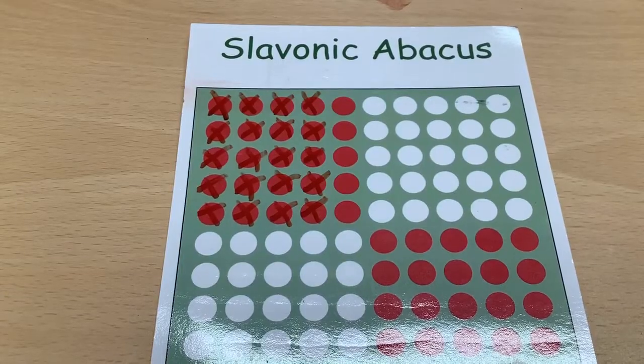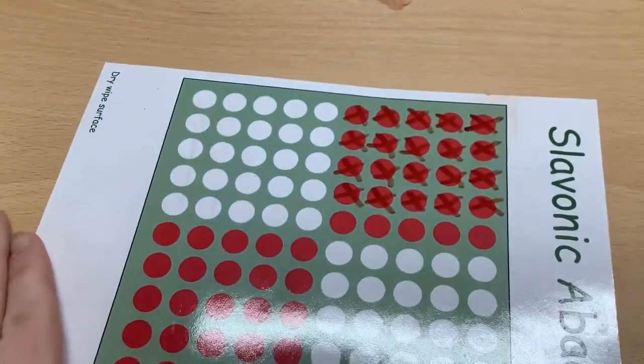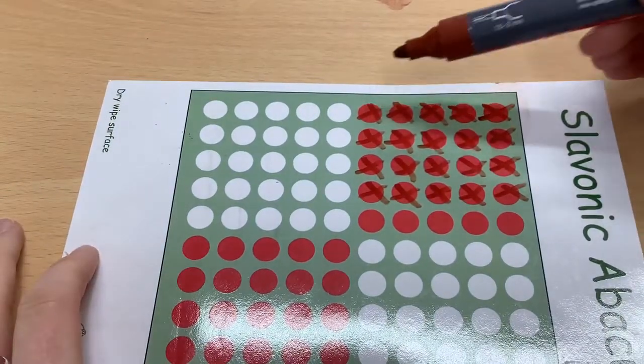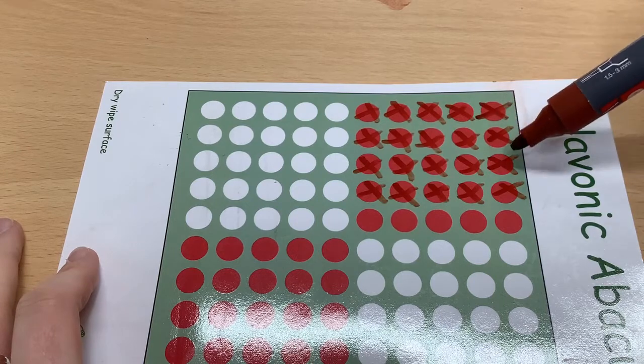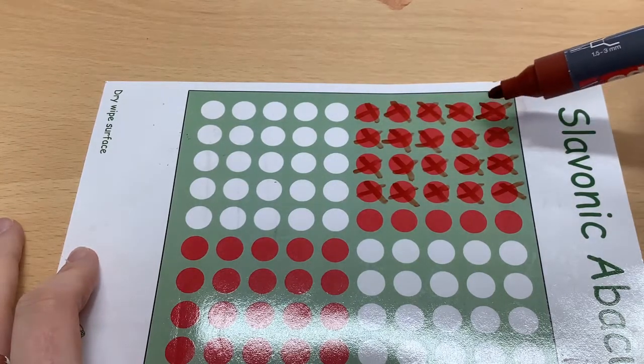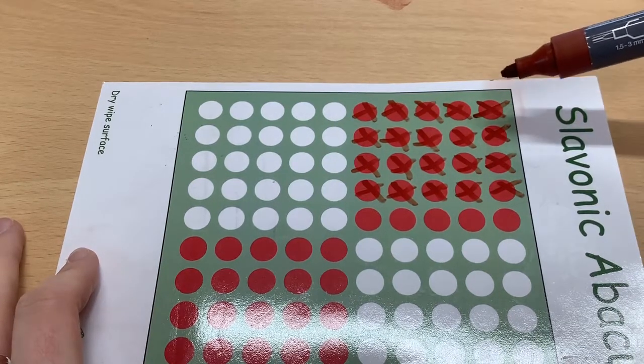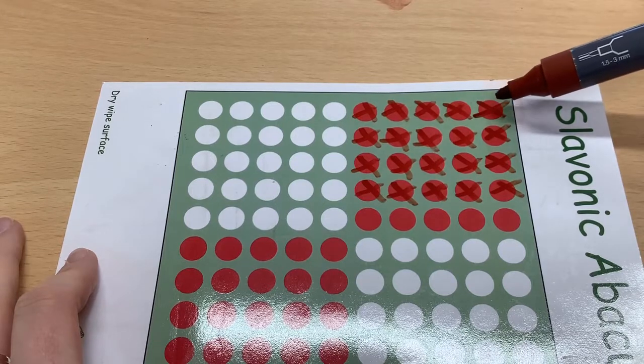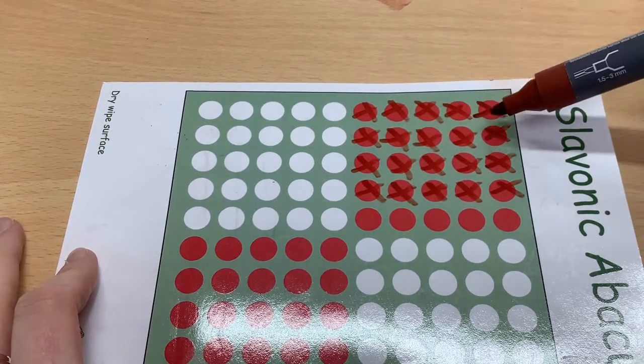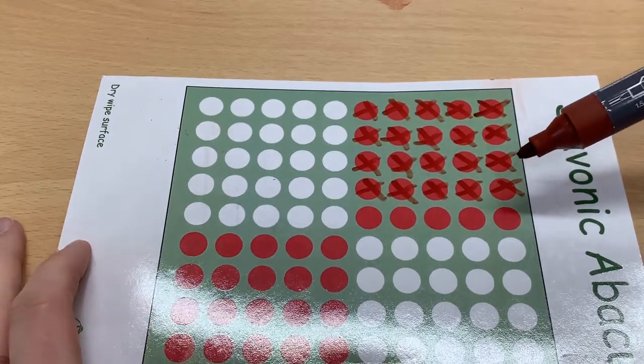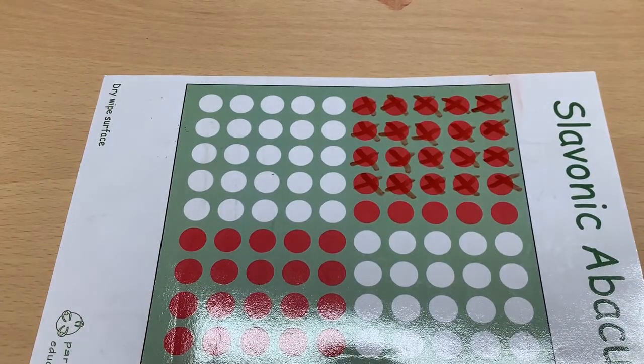If I flip my abacus, I've now got 1, 2, 3, 4, 5 four times. 5 four times. And counting in my 5s, I can see 5, 10, 15, 20. So 5 multiplied by 4 also has the product of 20.